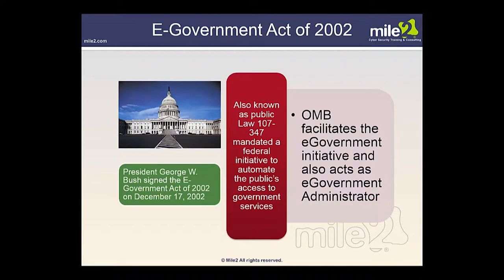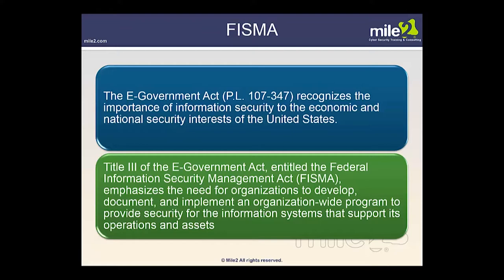A core foundation of information security is based on the E-Government Act of 2002, which mandated the protection of information systems and required yearly annual reporting by each agency head to Congress on the status of the security of information systems. President George W. Bush signed this act on December 17, 2002 — Public Law 107-347 — which mandated a federal initiative to automate the public's access to government services. The OMB facilitates the E-Government initiative and acts as E-Government Administrator.